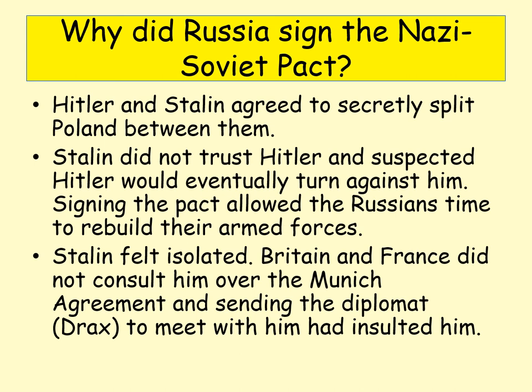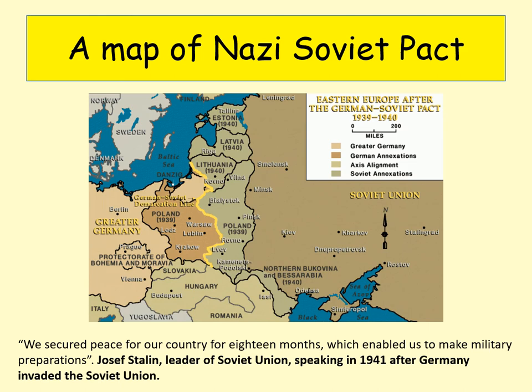Stalin felt isolated and felt that the pact bought him time. He knew in his own mind the agreement wouldn't last long, but it gave him time to rebuild his armed forces. The map shows the territory taken by the Soviet Union, increasing Stalin's power, while Germany gained living space in the east. As Stalin himself said in 1941: 'We secured peace for our country for 18 months, which enabled us to make military preparations.' After the pact, they started to really prepare for war.